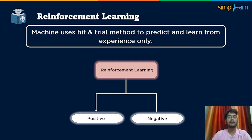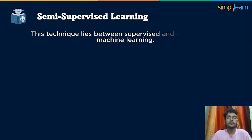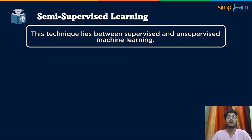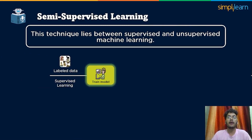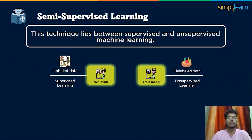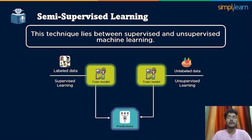The last type is semi-supervised learning — a sort of machine learning algorithm that lies between supervised and unsupervised machine learning. It takes labeled and unlabeled data to predict outcomes. To overcome the disadvantages of both supervised and unsupervised learning algorithms, the idea of semi-supervised learning was presented. The principal point of semi-supervised learning is to utilize available information successfully. Let's now move forward to see commonly used algorithms in machine learning.